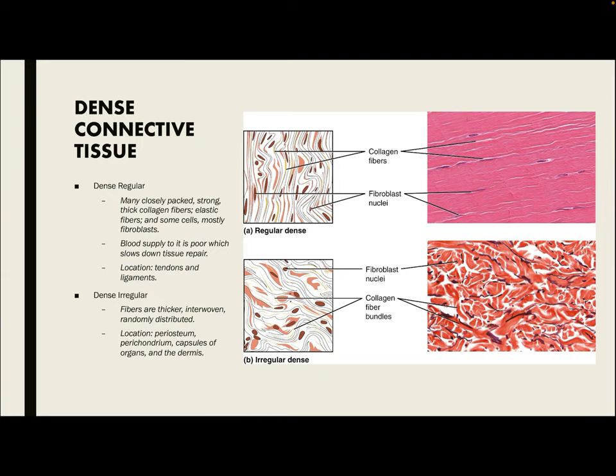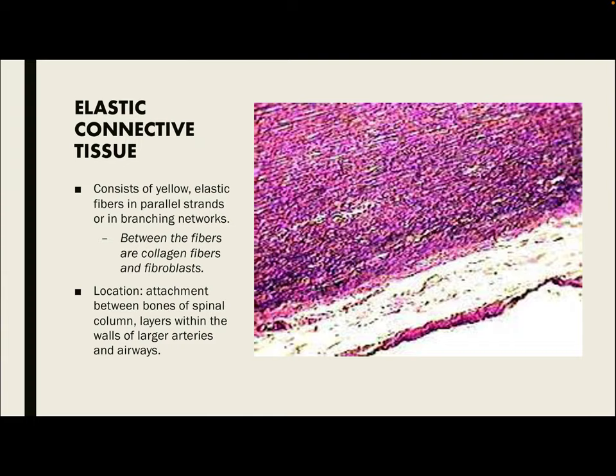Next, we have dense connective tissue, and there are two types: dense regular and dense irregular. Dense regular is very closely packed with thick collagen fibers and is elastic, but its blood supply is very poor, which slows down tissue repair — which is why a sprain can take a while to heal. They're located in the tendons and ligaments. Dense irregular is thicker than dense regular and randomly distributed, located in the periosteum, perichondrium, capsules of the organs, and the dermis.